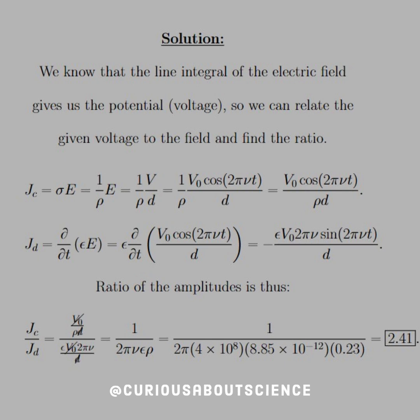So when we take the ratio of their amplitudes, i.e. neglecting the sine and cosine since they undulate between negative 1 and 1, we cancel out their initial voltage and the distance between the plates from the electric field. And you see we cancel, so we just get this 1 over 2 pi nu epsilon rho.